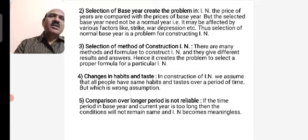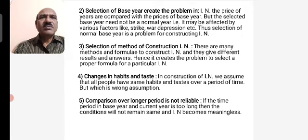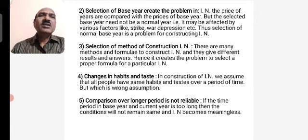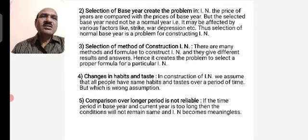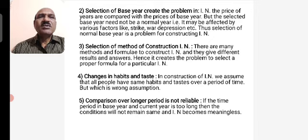The third problem is the selection of the method for constructing index numbers. Methods include Fisher's index, the weighted index number, and others. These are difficult to construct, they give different results, and hence it creates a problem to select a proper formula or method for constructing the index number. The next limitation relates to changes in habits and tastes.